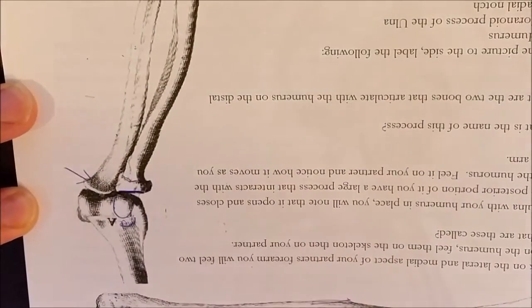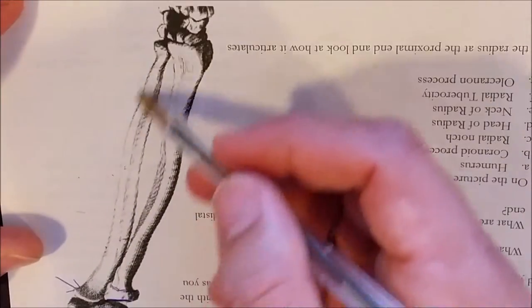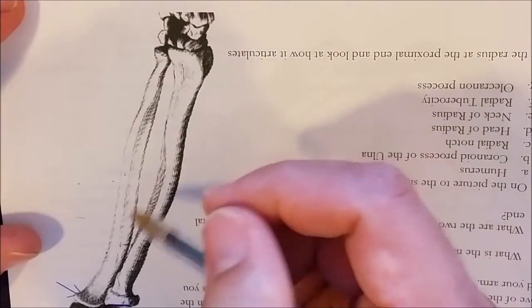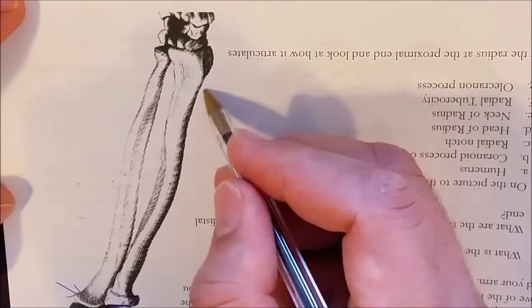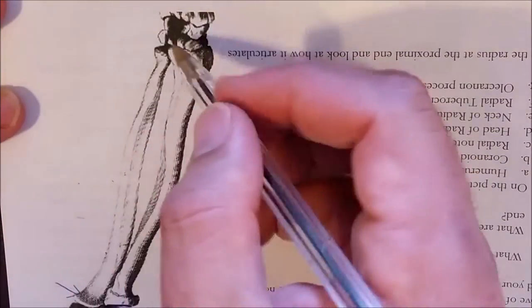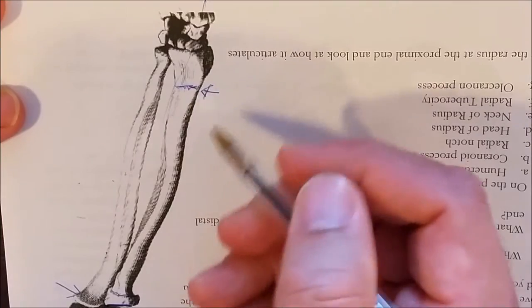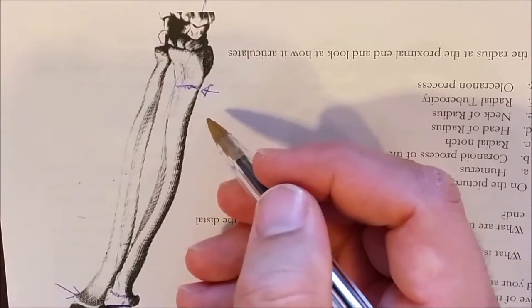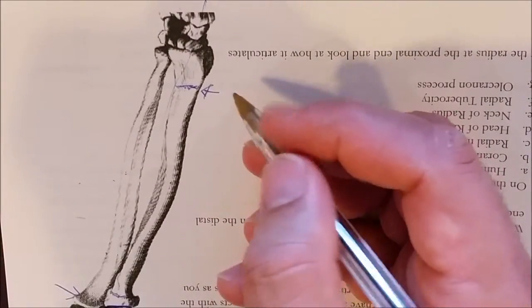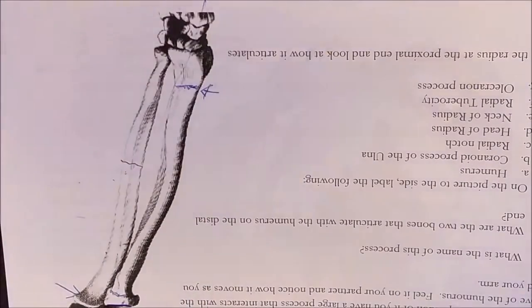When we look at the ulna, we notice it goes straight and gets thin, while the radius gets bigger as it goes down. The bone that usually breaks is the radius at the wrist — if you fall on an outstretched hand, the weight comes through and causes a break called a Colles' fracture. The ulna can break too, usually in the mid-shaft — this is called the nightstick fracture, because it doesn't bear weight but can break if you block a blow with your forearm.